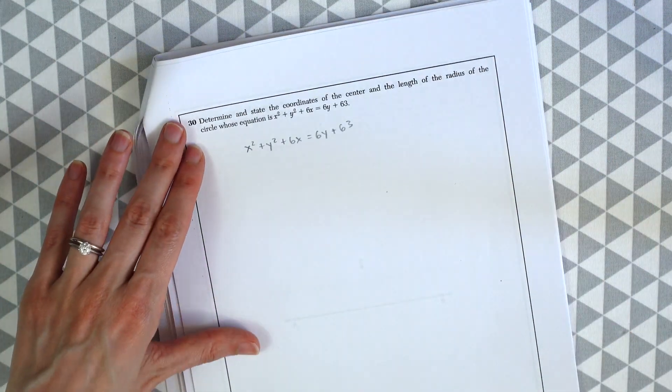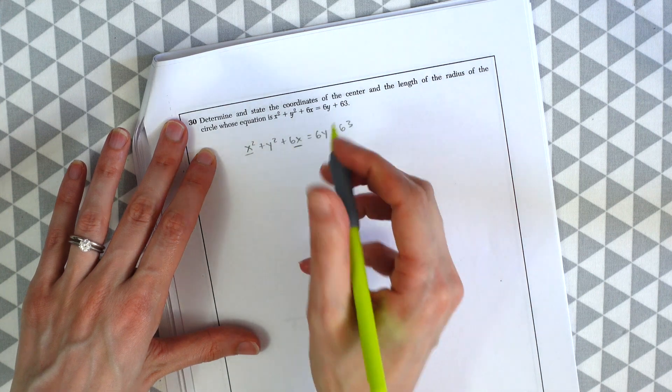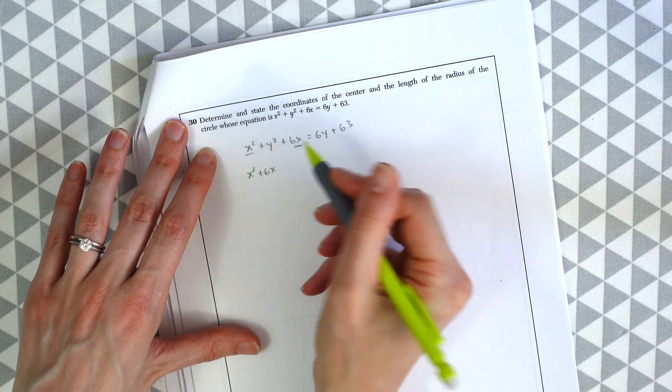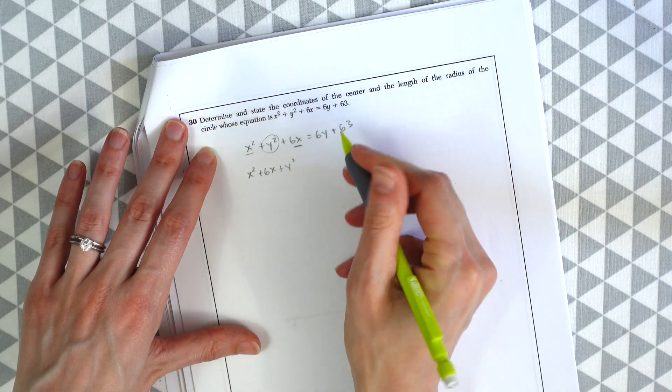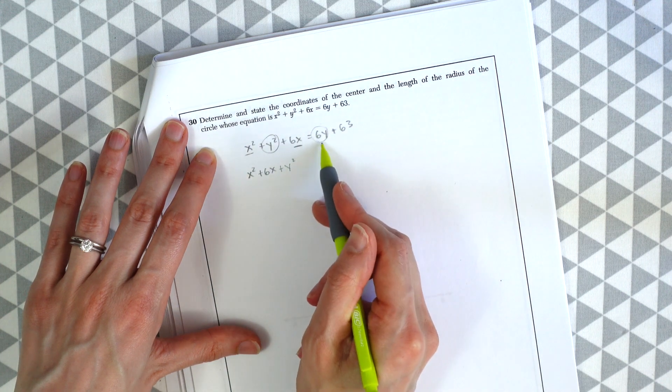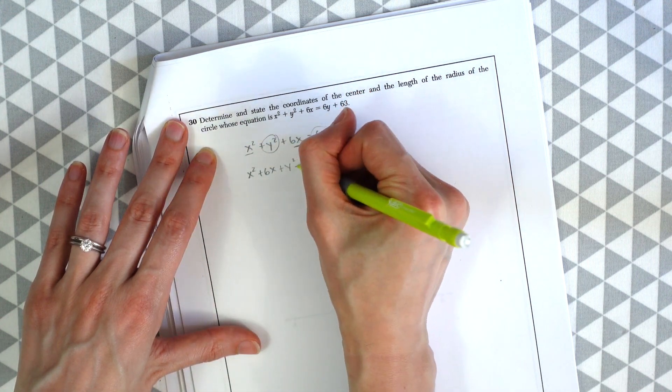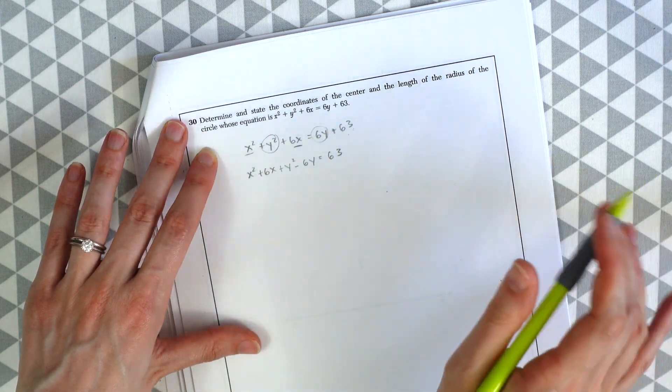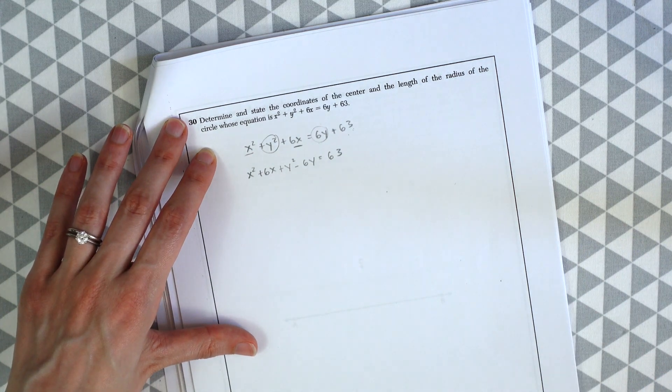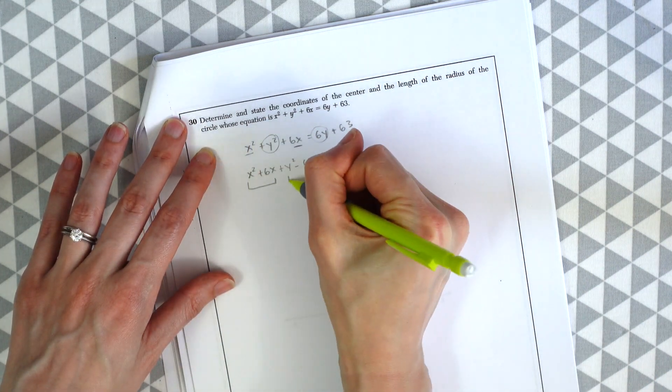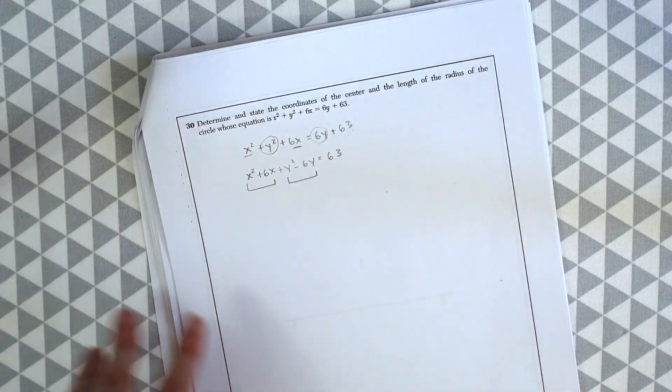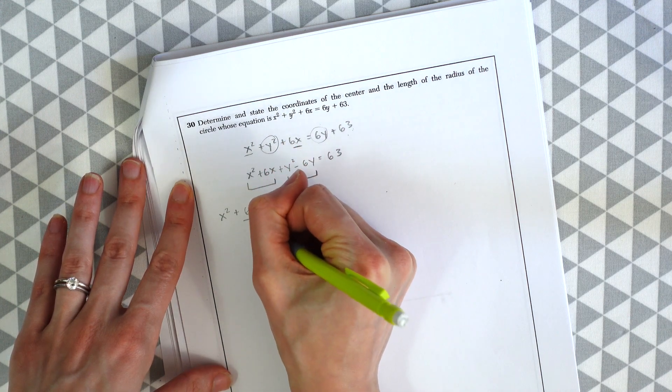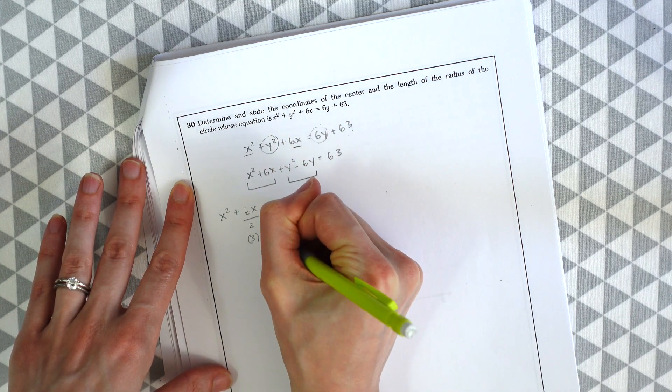So the first thing we're gonna want to do is group together the x values and the y values. So we have x squared plus 6x grouping those x values together. And then we have plus y squared. You want to group the y values together. So y is on the other side of the equation. So we're just gonna bring it over and subtract 6y. And then we still have the 63. Keep our whole number to the right. So now we're gonna be completing the square two times separately with the x values and the y values. So to do that we're just gonna do x squared plus 6x. Divide 6 by 2. We get 3. And then we're gonna square that.